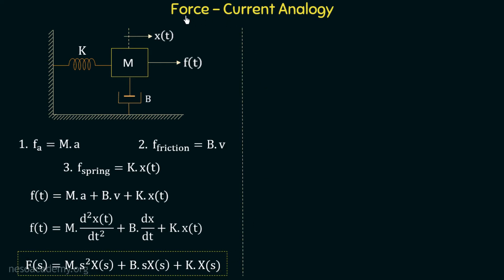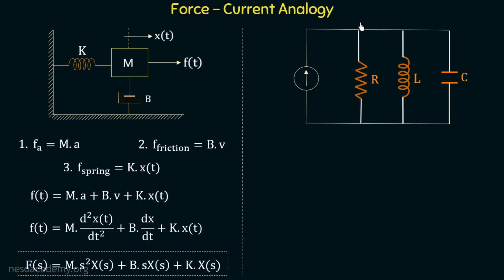In order to establish the force-current analogy, we will consider an electrical network. Let us consider a parallel RLC network with a current source. In force-current analogy, the force in the mechanical system is replaced with a current source. If the current in this source is I, it will be divided among the three elements: the current through the resistor is IR, the current through the inductor is IL, and the current through the capacitor is IC.